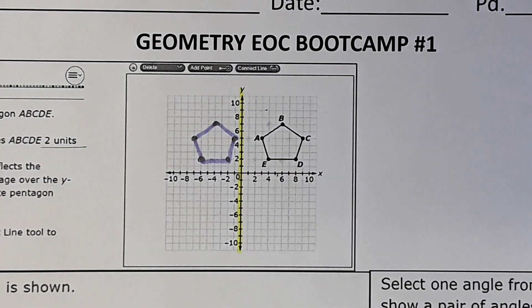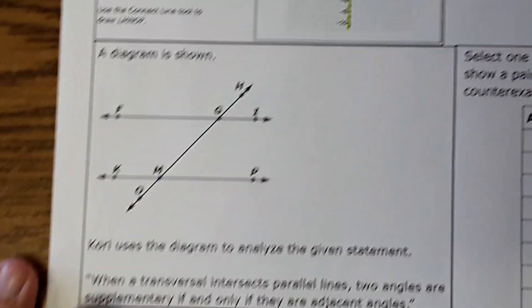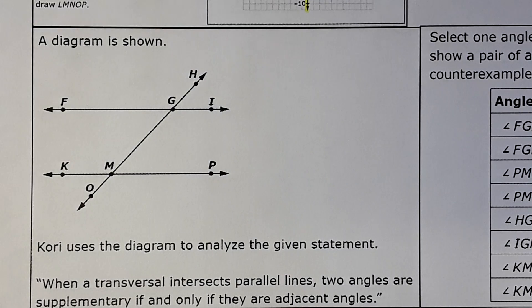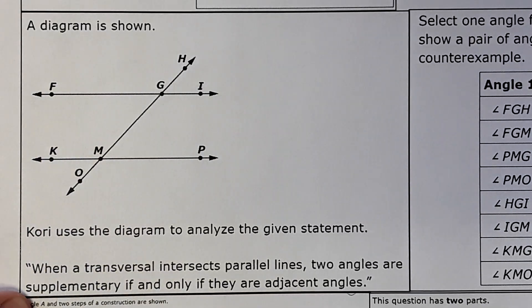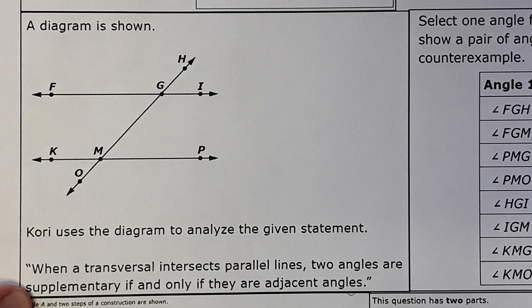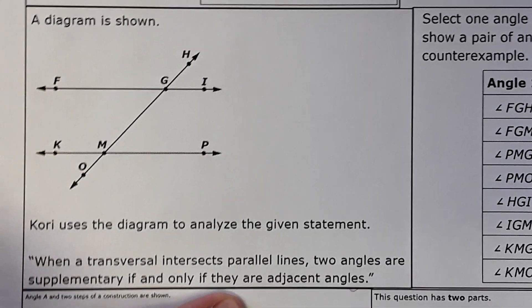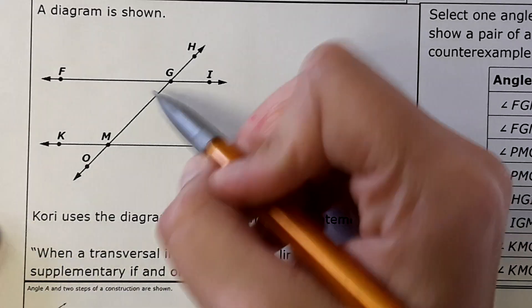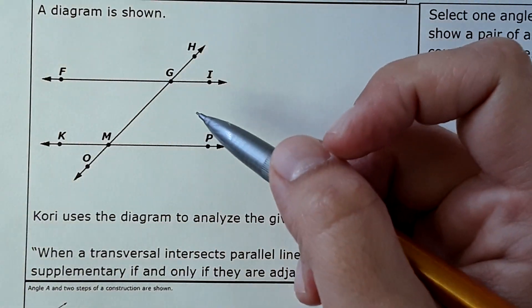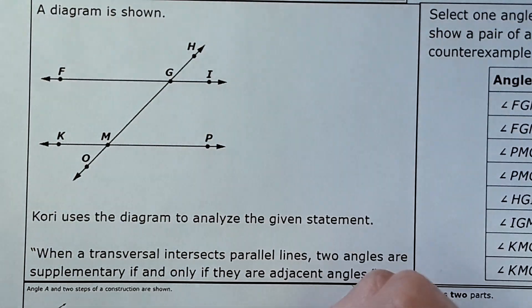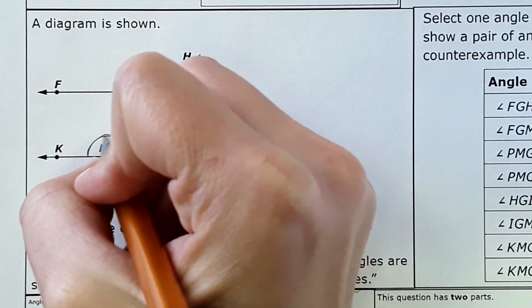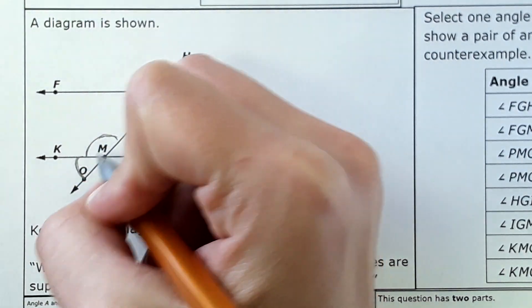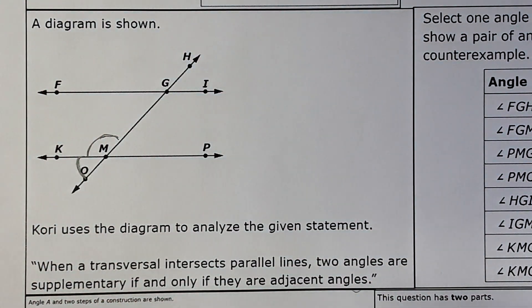Next one - a diagram is shown with two parallel lines and a transversal. Corey uses the diagram to analyze the given statement: when a transversal intersects parallel lines, two angles are supplementary if and only if they are adjacent angles. As you know with parallel lines there are angles that are equal and angles that are supplementary. This statement is saying angles can only be supplementary if they're adjacent, but that's not the only pair of supplementary angles we have here.